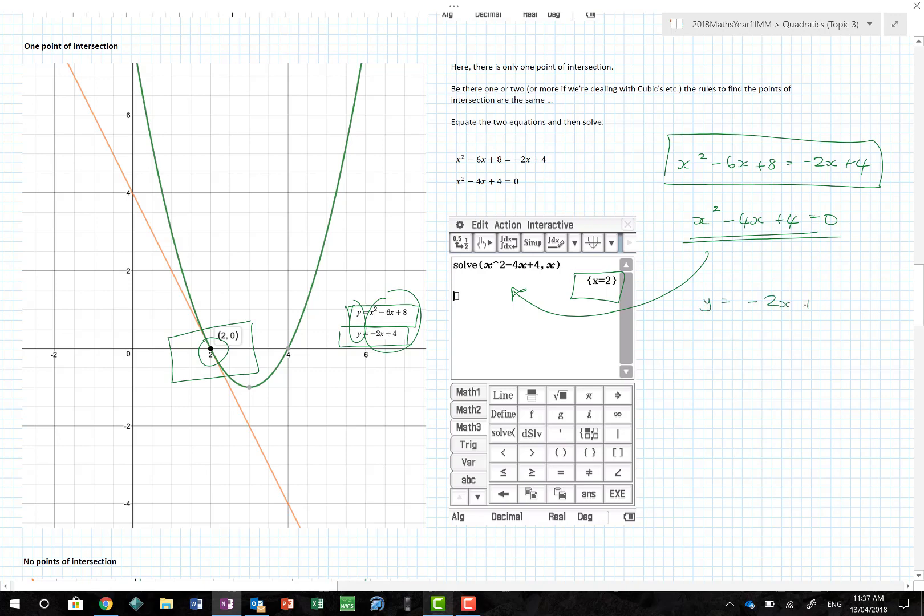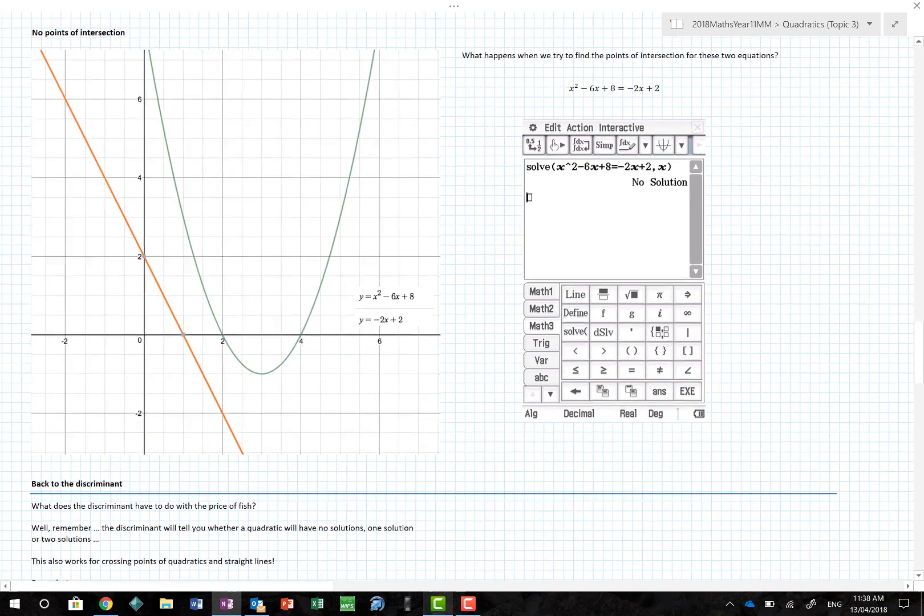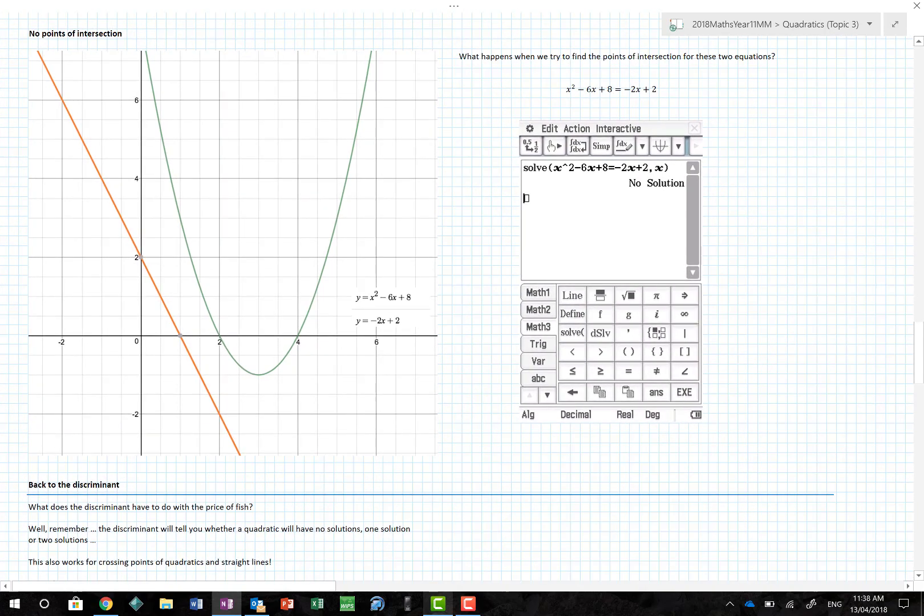Put that in my CAS calculator with solve and I find out my x value is 2. How would I find my y value? Put it into probably my easiest equation, minus 2x plus 4. We know x equals 2, so y equals 0. I would state my coordinate as (2, 0). There was just one point of intersection.